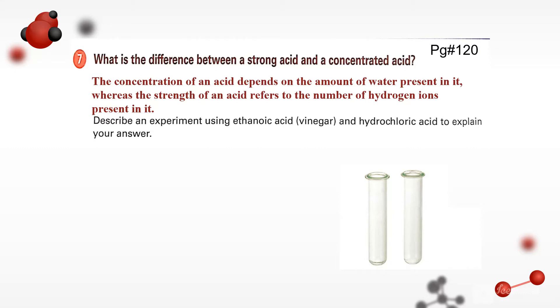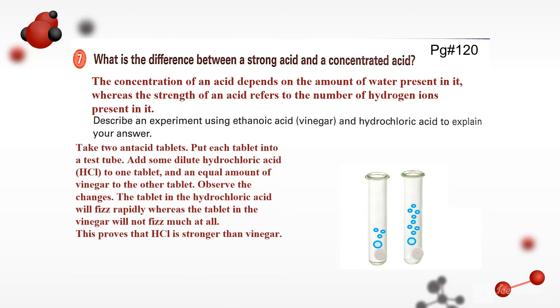The next part of this question is: Describe an experiment using ethanoic acid, that is vinegar, and hydrochloric acid to explain your answer. So we will take antacid tablets, that are probably alkaline. Then we will add vinegar and dilute hydrochloric acid on such tablets. After adding the solutions, we will see that bubbles will appear there, but more bubbles will be produced from the hydrochloric solution as compared to that of the vinegar. That will tell us that hydrochloric acid is stronger than vinegar.